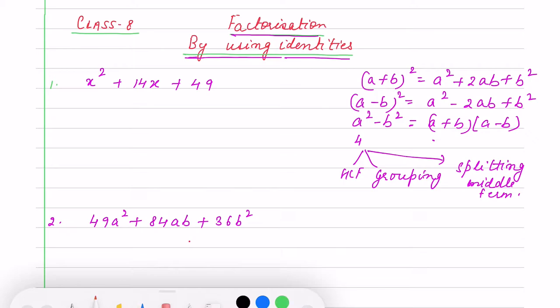See the first term: x² + 14x + 49. I cannot take any common factor. I can't regroup it, there are three terms. I can't apply grouping. For splitting the middle term, 49 we can't break such that 14 will come. So what method to use? By using identity.